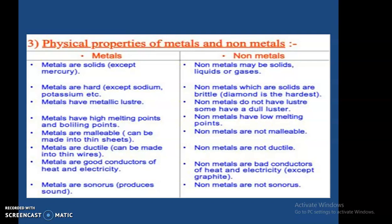I hope the physical properties of metals and non-metals are clear. For classwork, take your fair notebook and write down all the metals and non-metals. Include how many total elements are in the periodic table — 118 — how many are metals and how many are non-metals. Write the physical properties and the two important definitions: malleability and ductility.